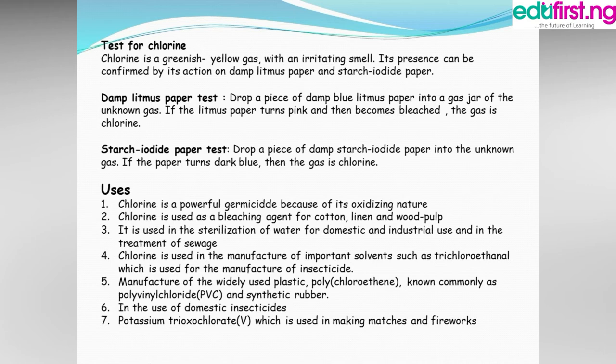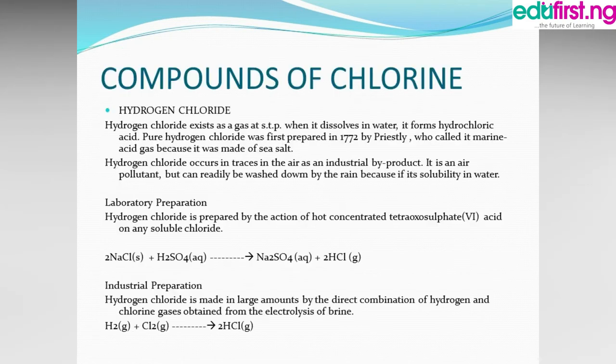Chlorine is used for the manufacture of the widely used plastic polyvinyl chloride, known as PVC, and synthetic rubber. It is also used in the production of domestic insecticides — that is why most insecticides have an irritating smell, so you should go out after using an insecticide in the home. Potassium chlorate (KClO₃) is also used in making matches and fireworks.